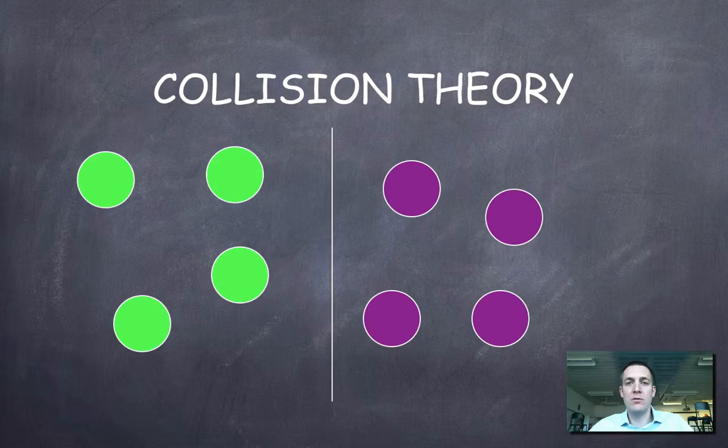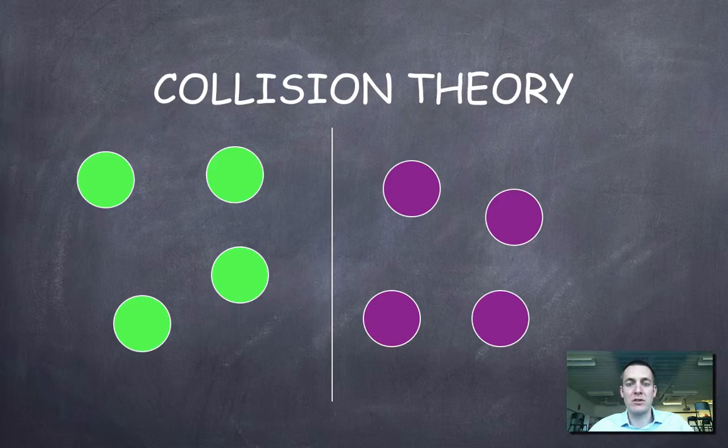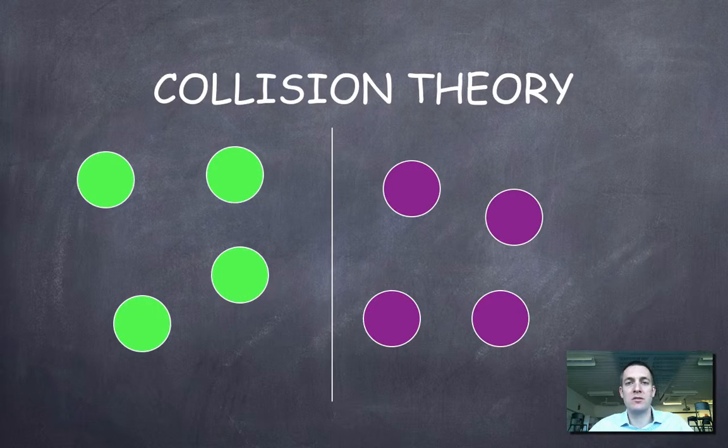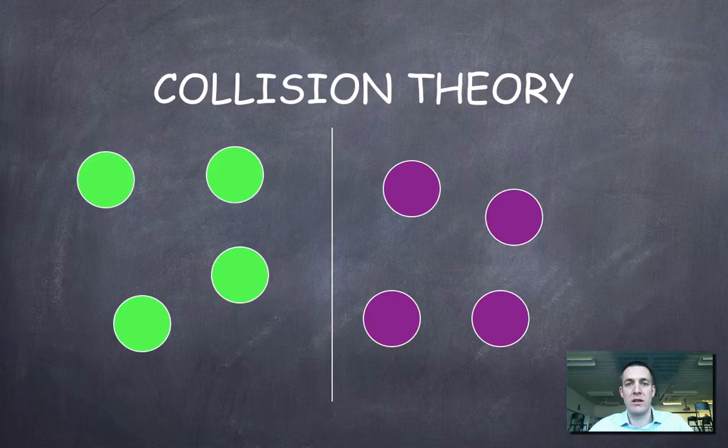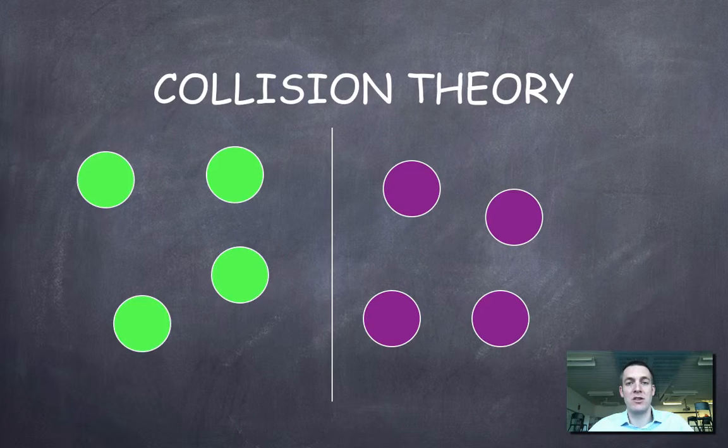And hopefully you can imagine that this barrier is going to prevent a reaction happening. Why is it going to prevent a reaction happening? Well, because there's no way for these two sets of particles to make contact with one another.